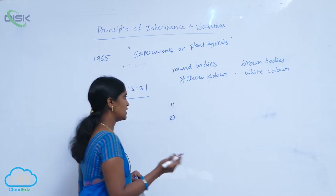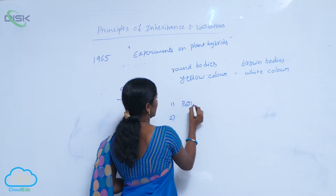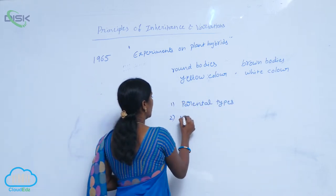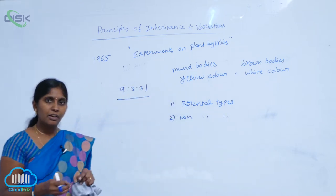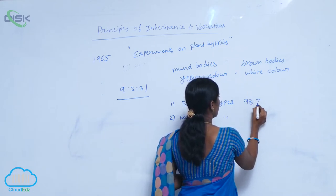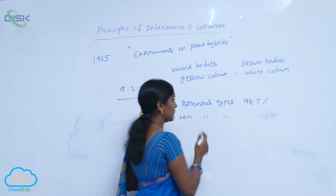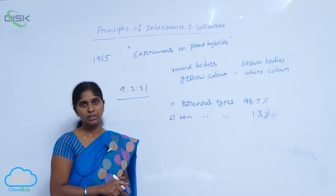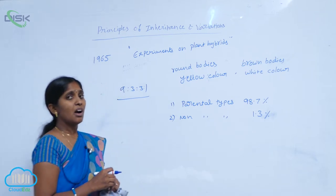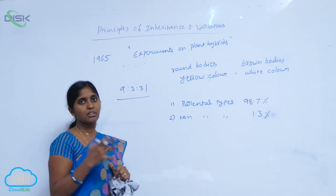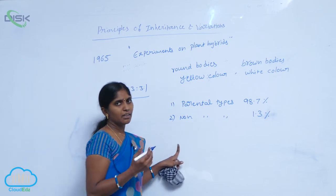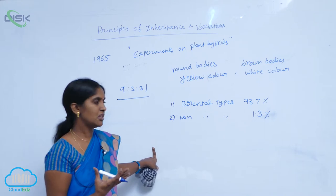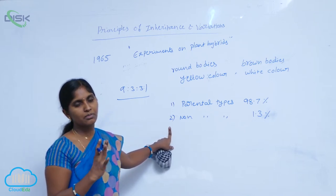Morgan got two types of progeny. One type of progeny was very similar to the parents — these are called parental types. Another progeny showed non-parental type characteristics. Out of 100% of progeny, 98.7% belonged to the parental type and 1.3% belonged to the non-parental type. Parental types show complete characters similar to the parents, while non-parental types show additional characters not present in the parents that appeared in the progeny.